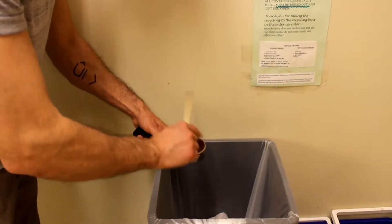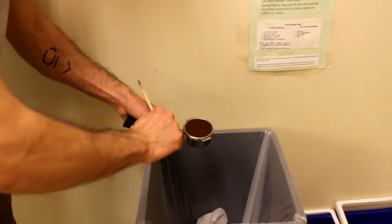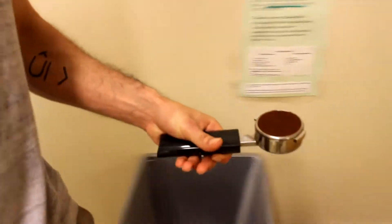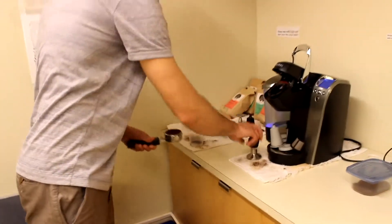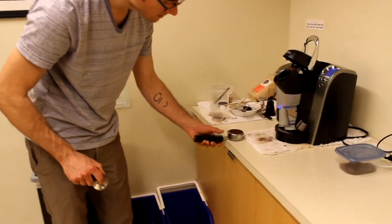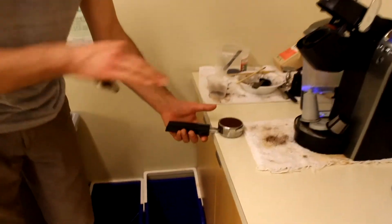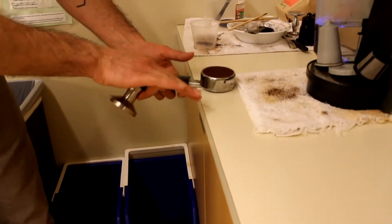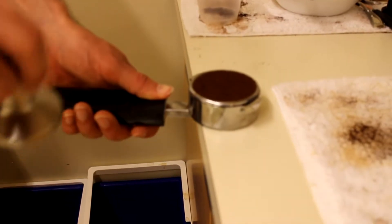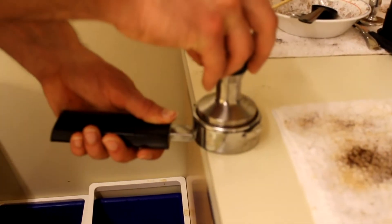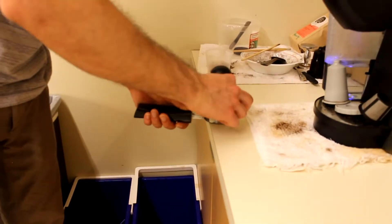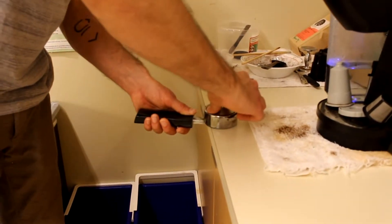Have it level on a level surface. Next, take this tamper. If you put the portafilter like this, it's a bit off balance. There's a little lip right here—put it there and it's flat on the counter.